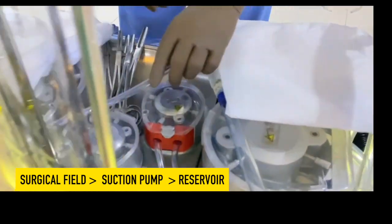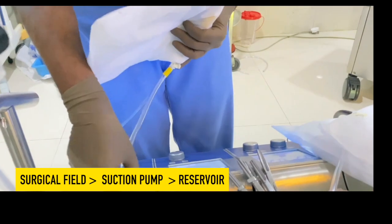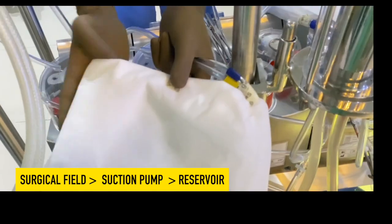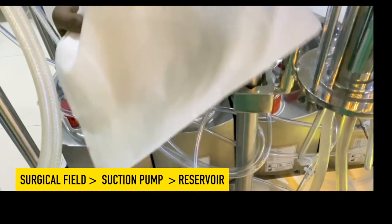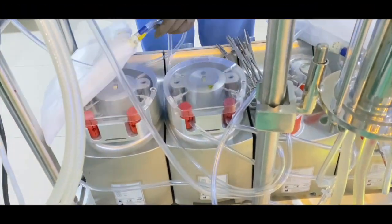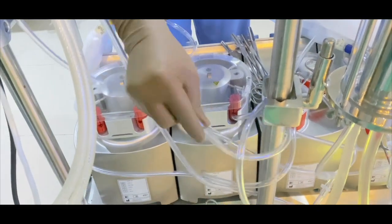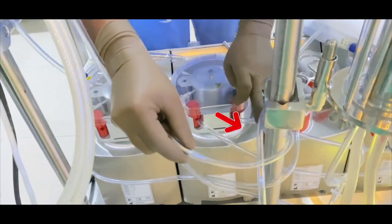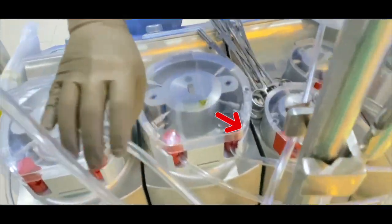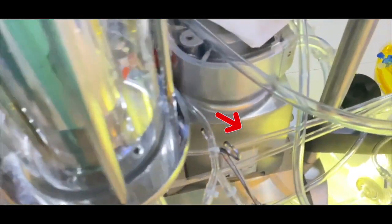Suction line. Suction line receives blood from surgical field and it will work as a vacuum. Both lines will again connect to the reservoir for the purification. The blood will receive from surgical field and the pump will provide this blood to reservoir for the purification.